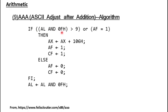This is how AAA works. It will first check the lowest nibble present in AL, and if it is greater than 9, as usual it has to add 6. But the thing to notice here is that when you add 6 and there is a carry due to addition, it is not passed to the next higher nibble — it is actually passed to the next higher byte, which means it is passed to AH.